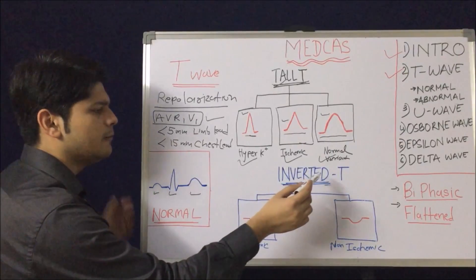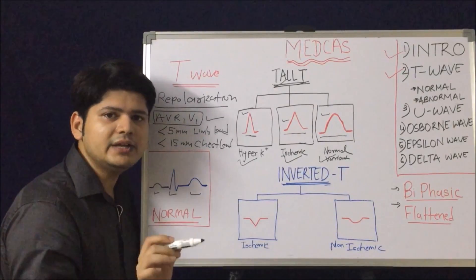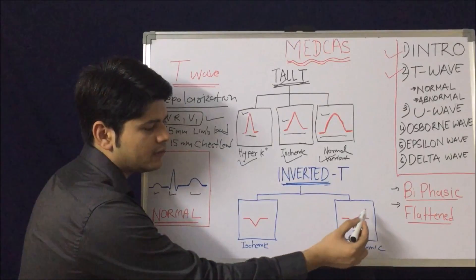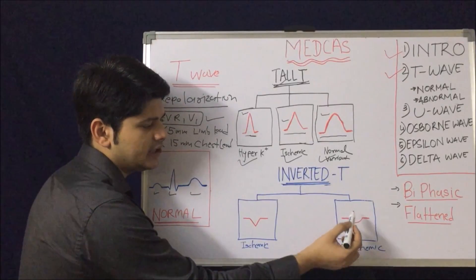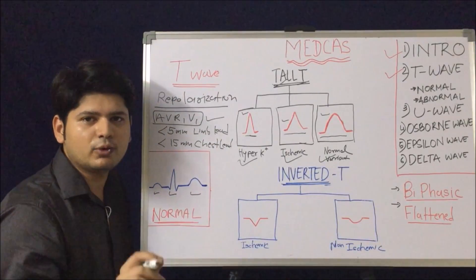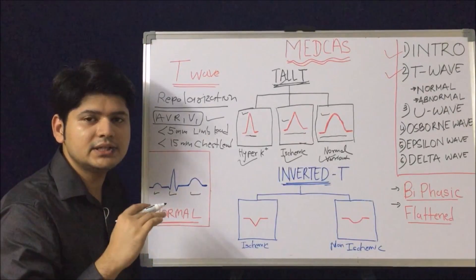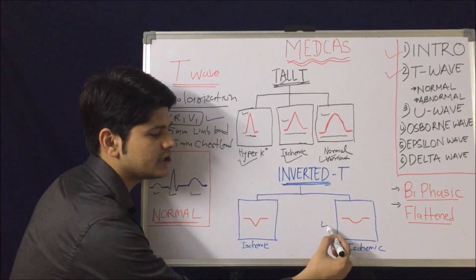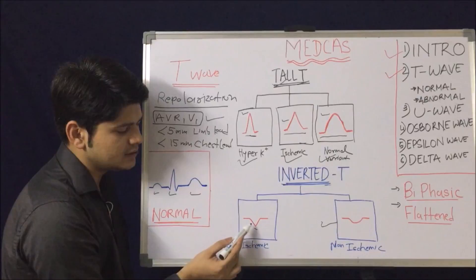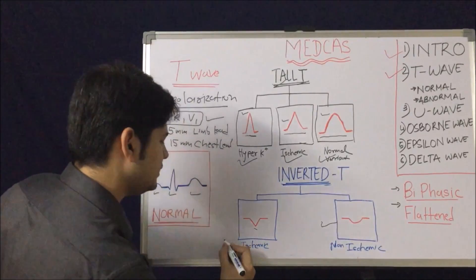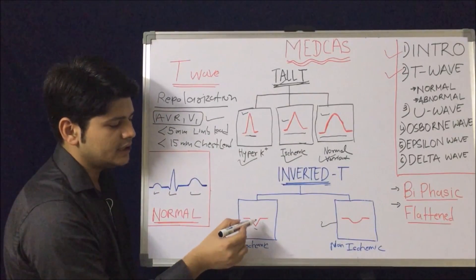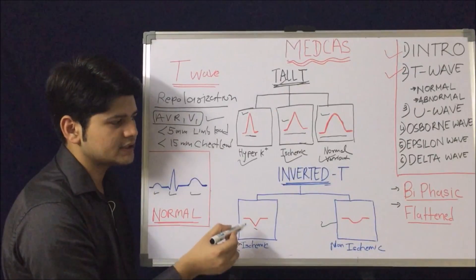Next we are going to understand the inverted T wave. We have seen in the normal definition that the T wave can be inverted in lead V1 and lead AVR. This is the morphology of a normal T wave inversion. The same morphology can also be seen in hypokalemia, but in hypokalemia T inversion will be seen in almost all leads — this is non-ischemic T wave inversion. If you see ischemic T inversion, it will be pointed, symmetrical, and at least more than 3 mm deep.